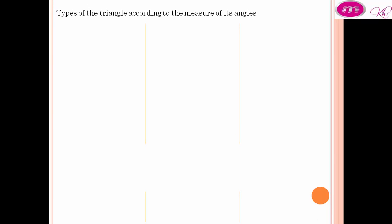Types of triangles according to the measure of its angles. Acute angled triangle has 3 acute angles.